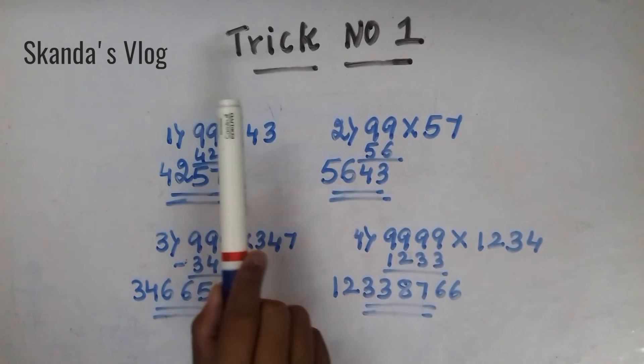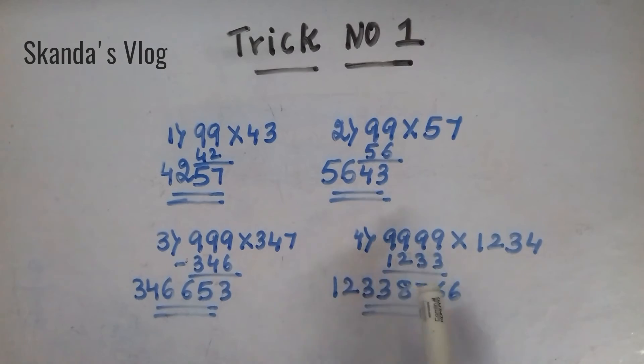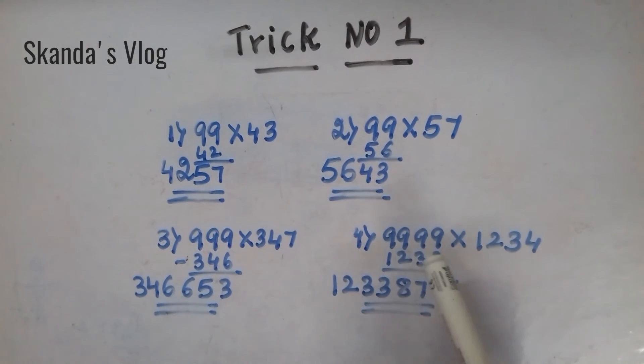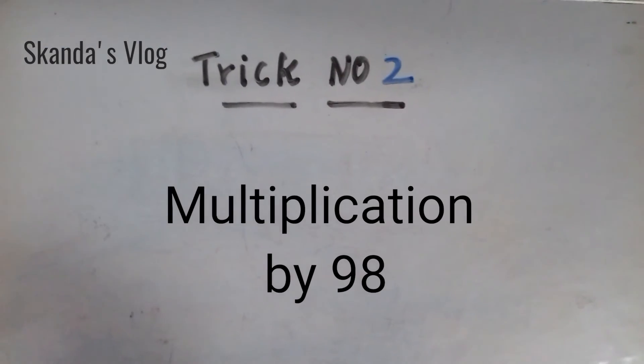The multiplication by 99. It is 99 into 43. Everything is from 99 or more than that.